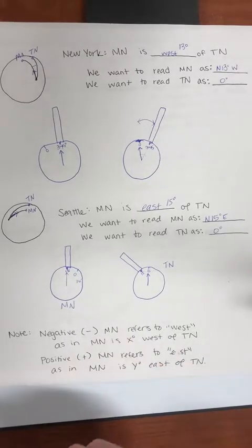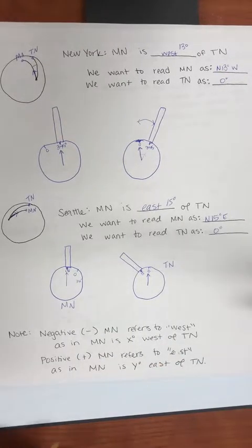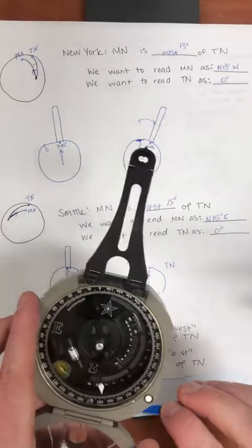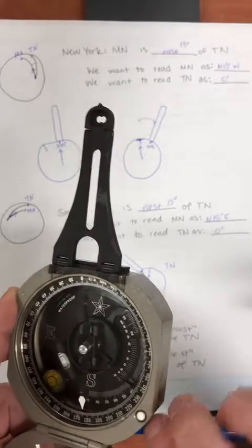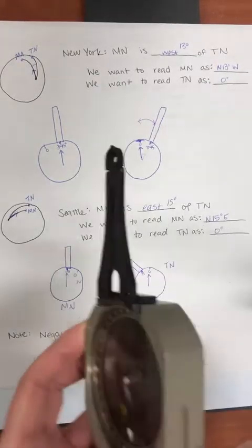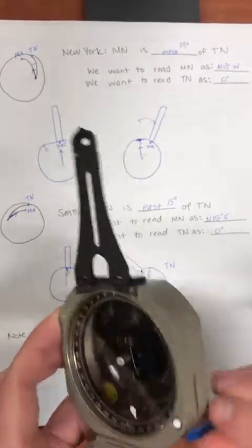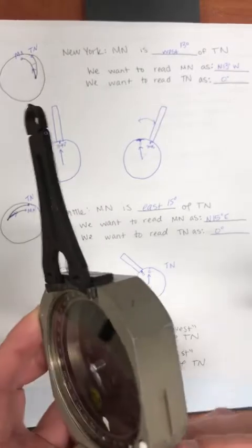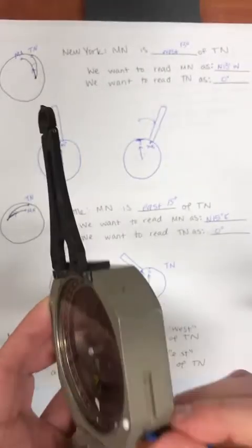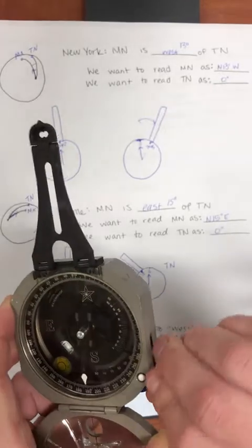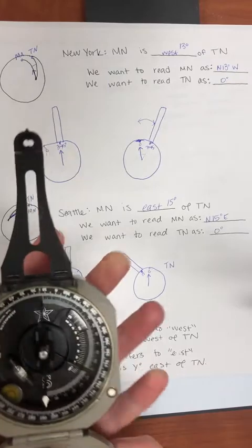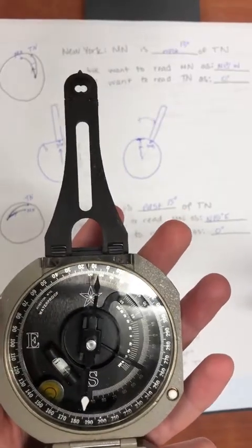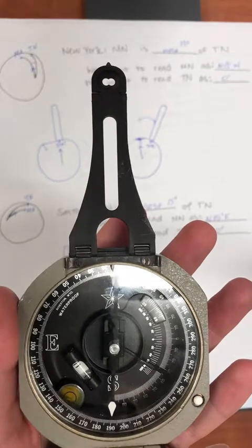You would just reverse the direction you turn the pin on the Brunton. I'm going to move the graduated circle around — it can take a minute sometimes. Now this Brunton is ready to collect data in Seattle.